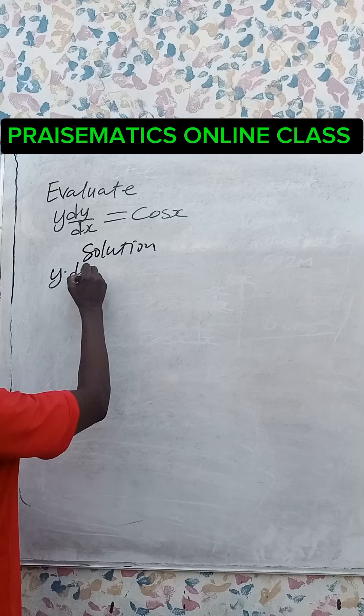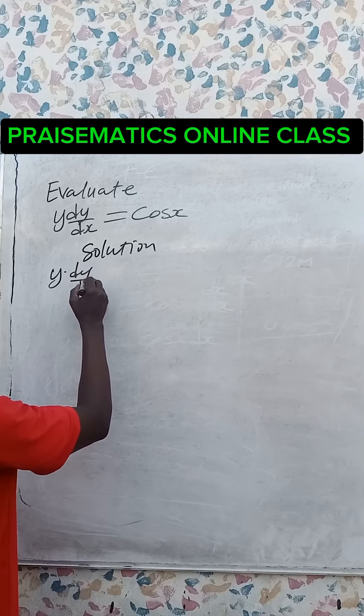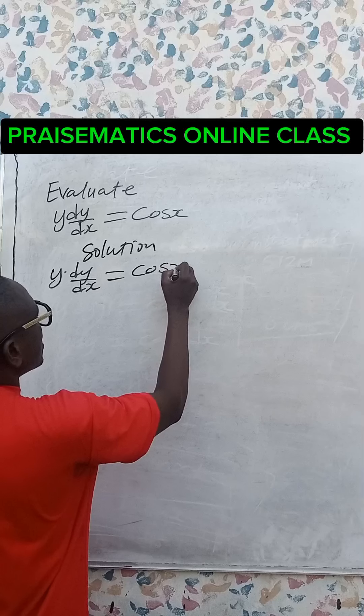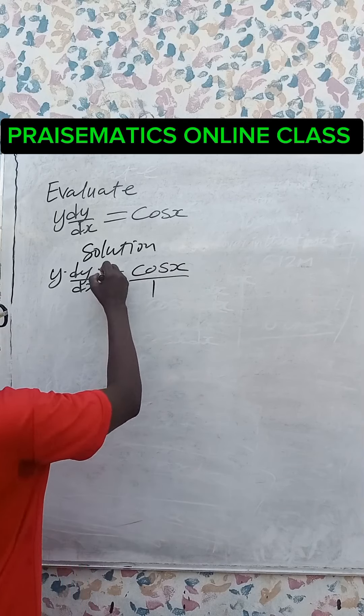Solution: y dot dy over dx equals cos x over 1. Cross multiply.